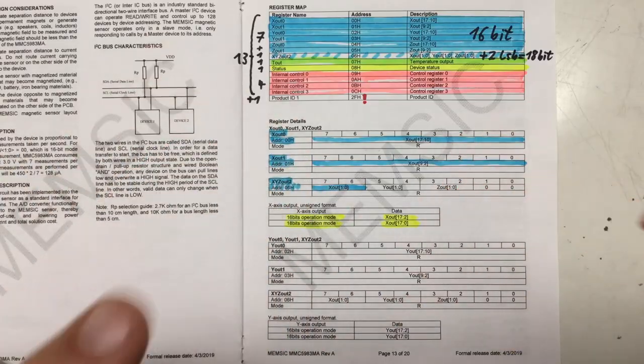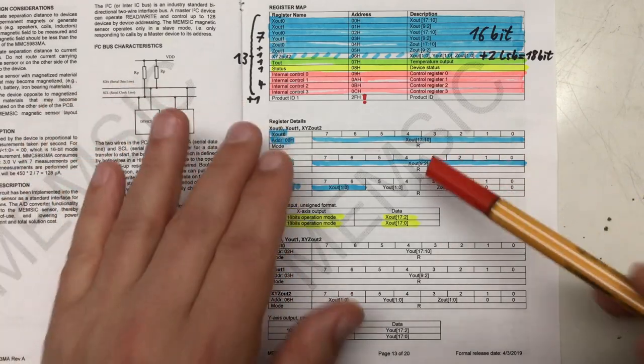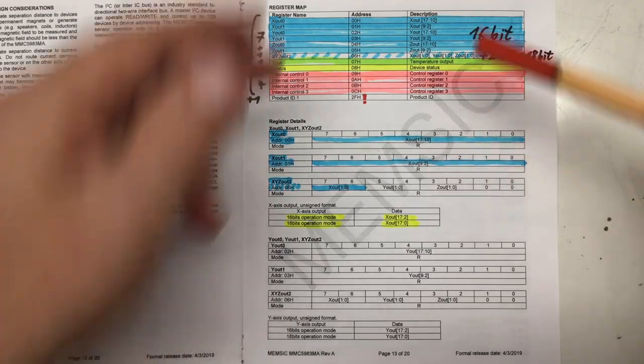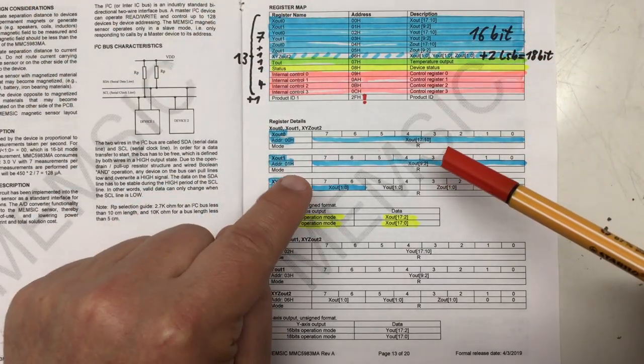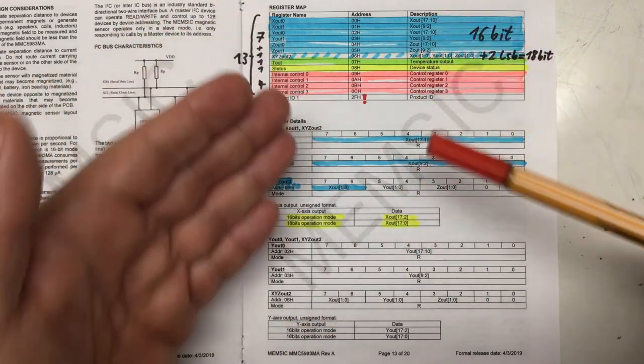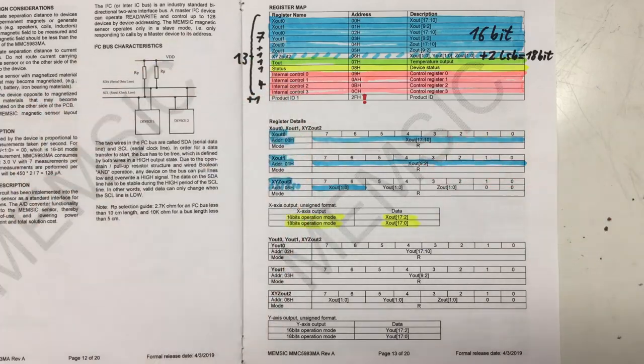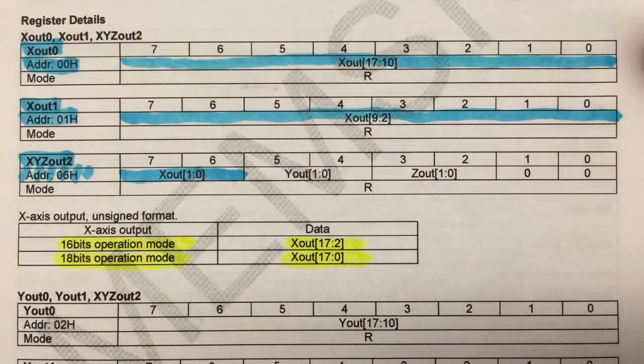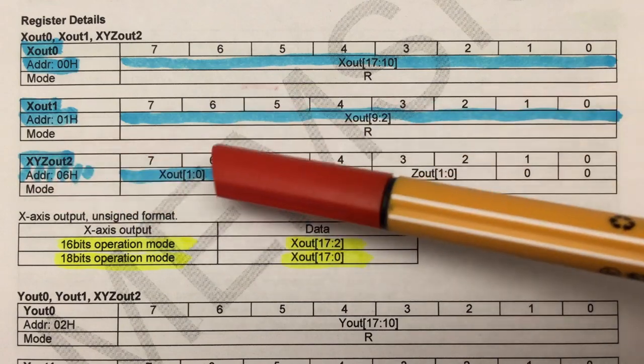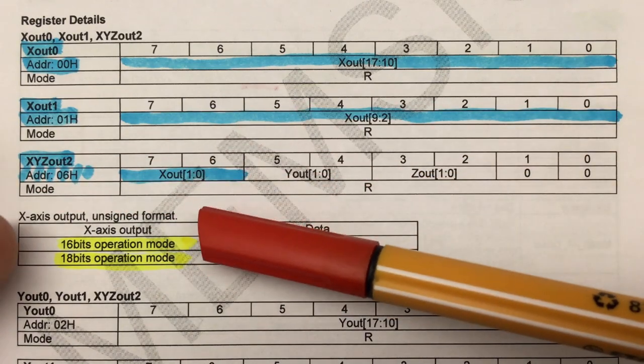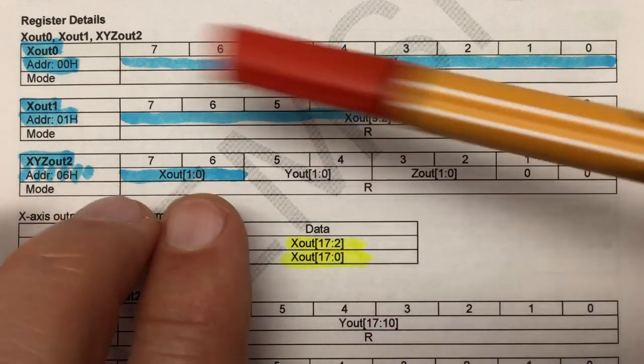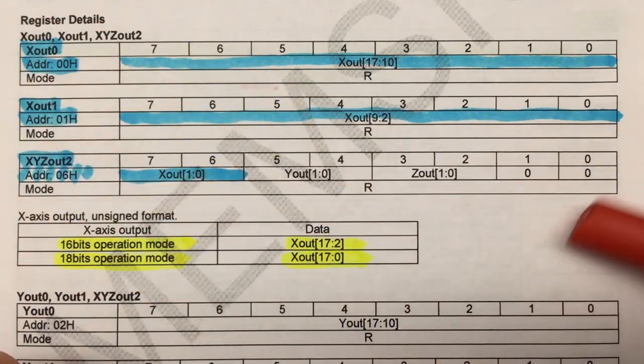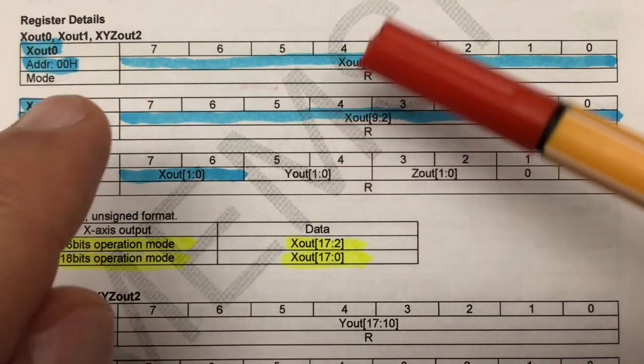But before we do a deep dive into AMR sensors, I want to revisit the magnetic field data we get back from that chip and maybe add one or two enhanced functions to read that data out, because that will enable us to view the effects of certain commands of that chip much better. We already went in part one over the registers containing the magnetic field data. It's basically 18 bits for each axis in an unsigned format. And you are free to just use 16-bit of the 18 bits. And that's then called a 16-bit operations mode.